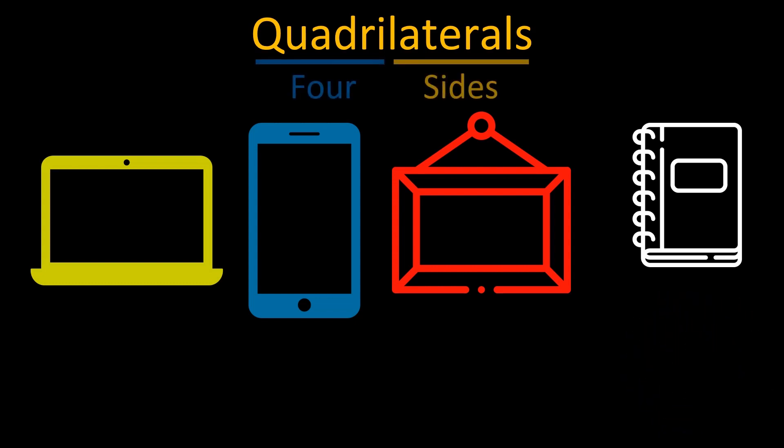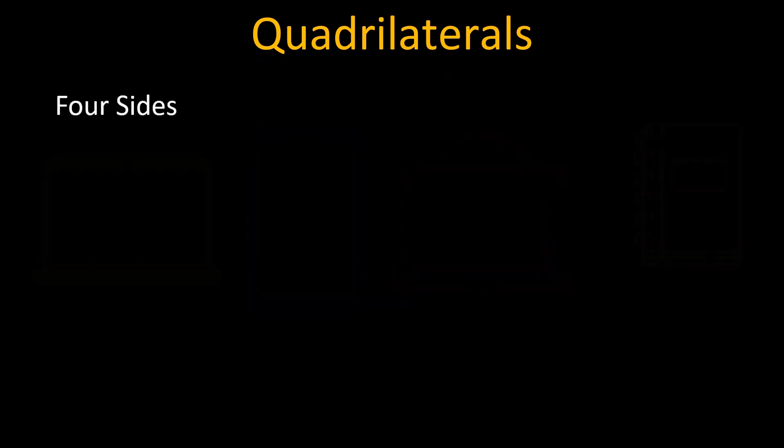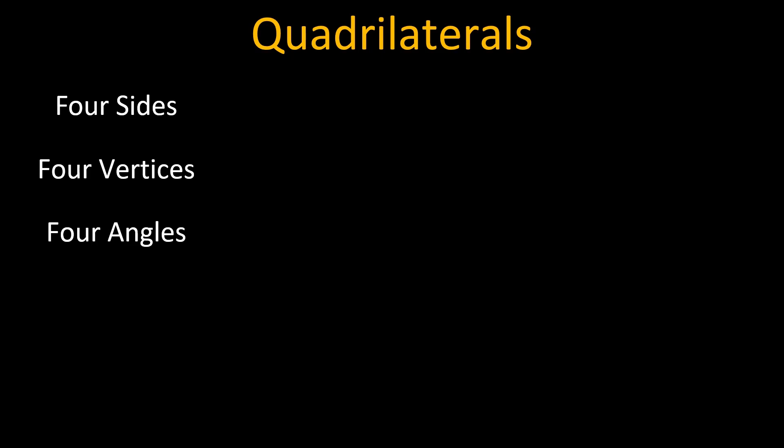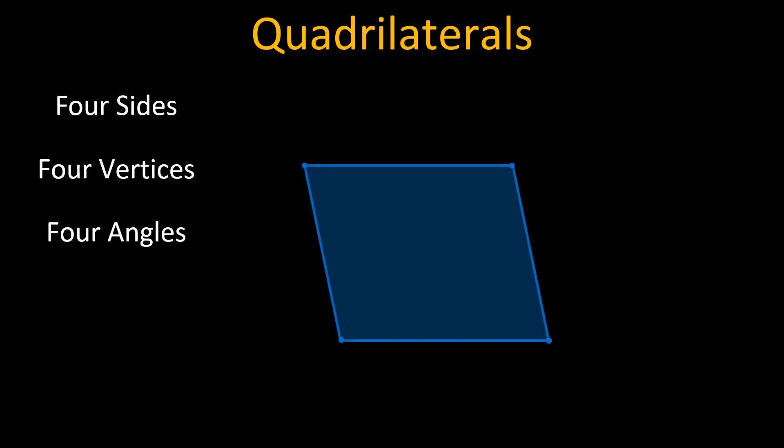A quadrilateral is a polygon that has four sides, four vertices and four angles. It is formed by joining four non-collinear points. This figure represents a polygon.